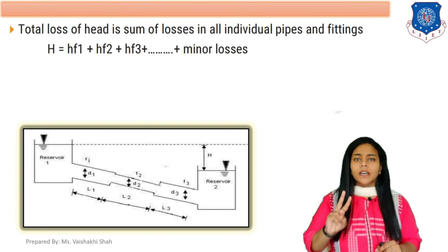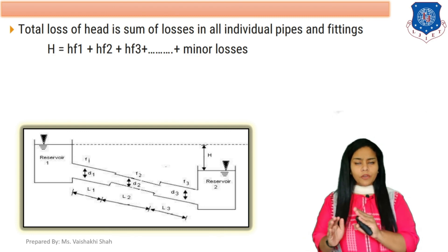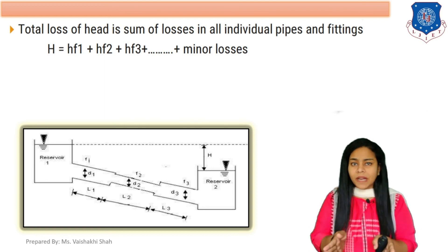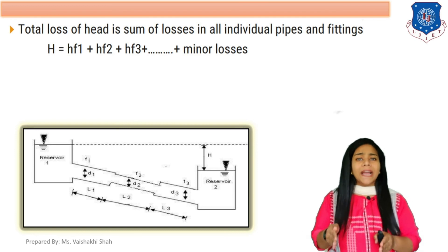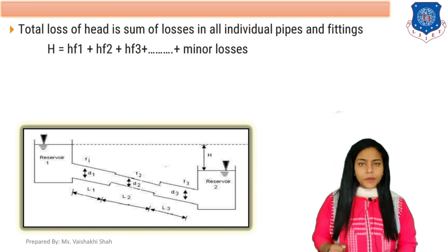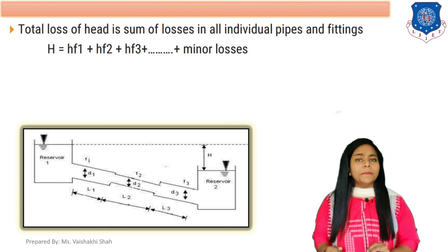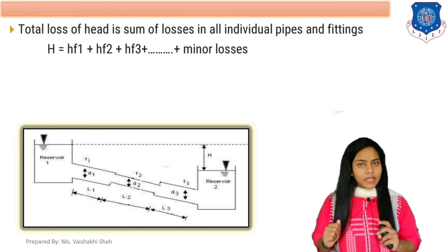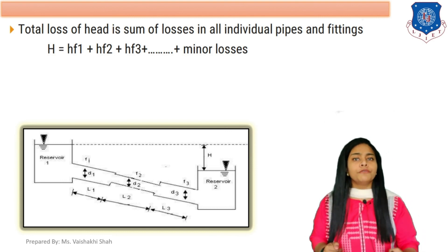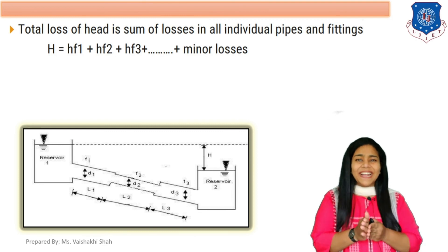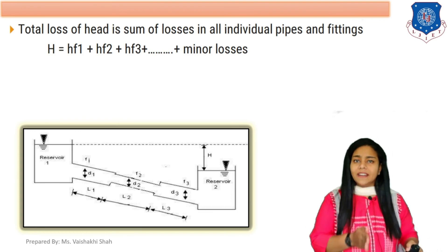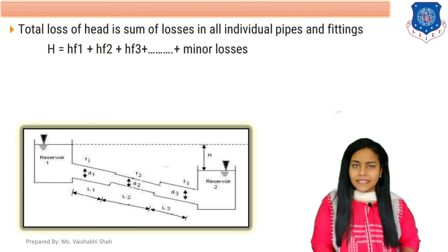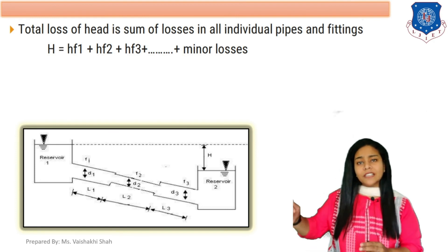In pipe two there is head loss due to friction as fluid flows through it. Fluid then enters pipe three where the diameter of the pipe increases — there is sudden expansion from pipe two to pipe three. At the entrance of pipe three there is head loss due to sudden expansion. Again in pipe three there is head loss due to friction. Finally, when fluid exits from pipe three into the reservoir, there is head loss due to exit.